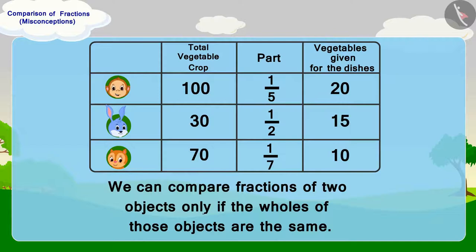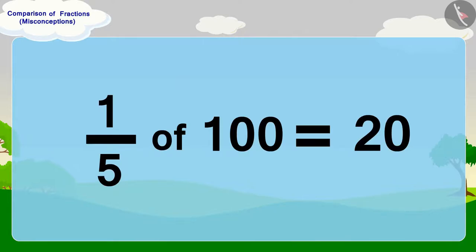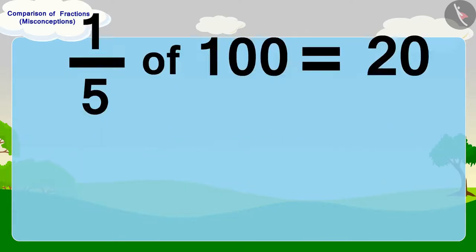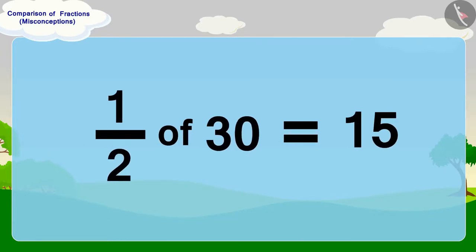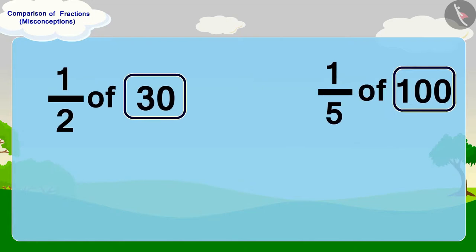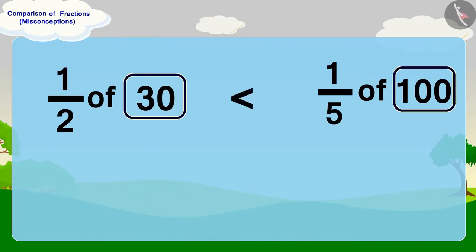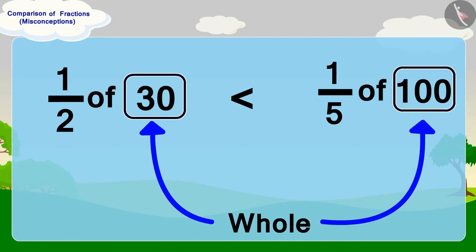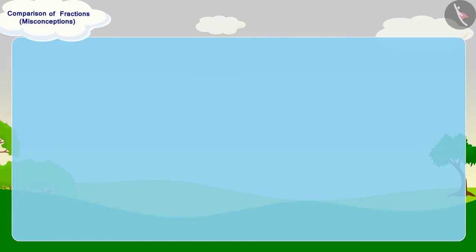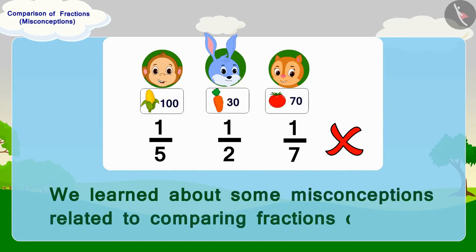As we know, the fraction one-half is more than the fraction one-fifth. But if we talk about one-fifth of 100 which equals 20, and half of 30 which equals 15, then we can see that half of 30 is smaller than one-fifth of 100 because their wholes are not the same. Therefore, to compare fractions, we must pay attention to fractions as well as their whole. In this video, we learned about some misconceptions related to comparing fractions of objects.